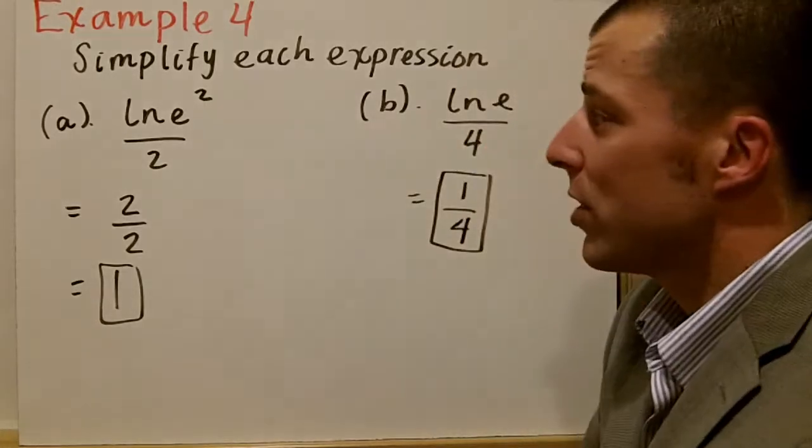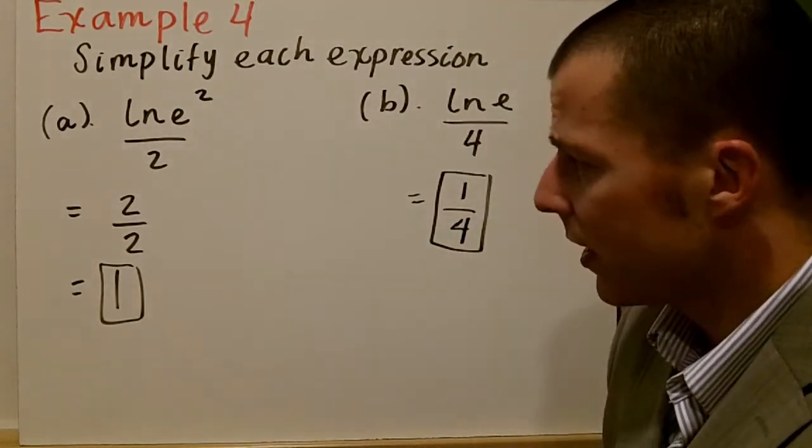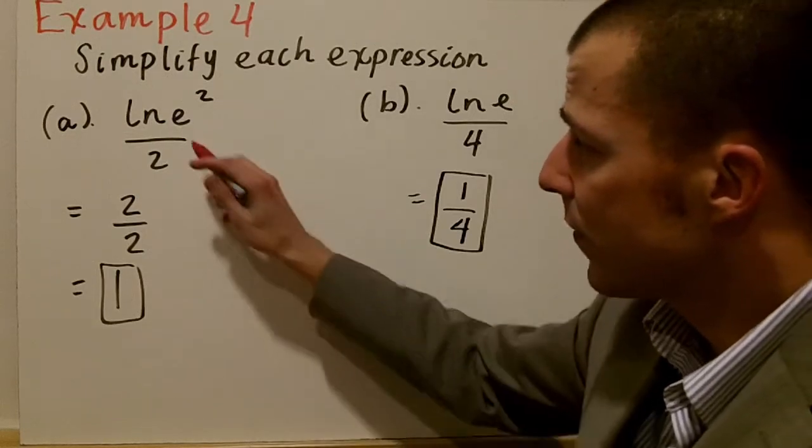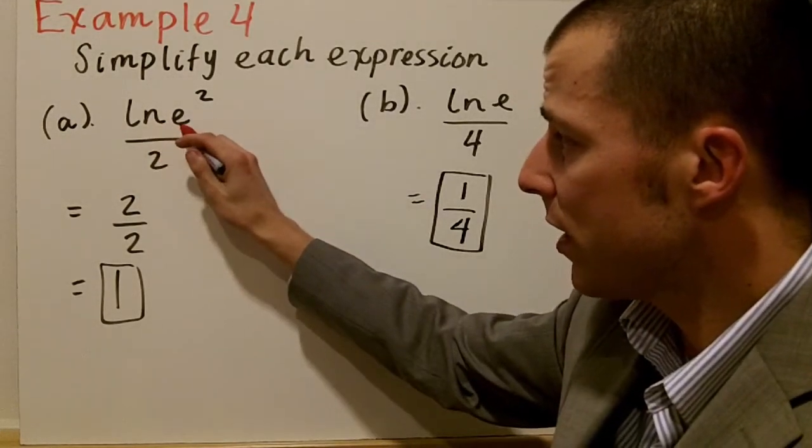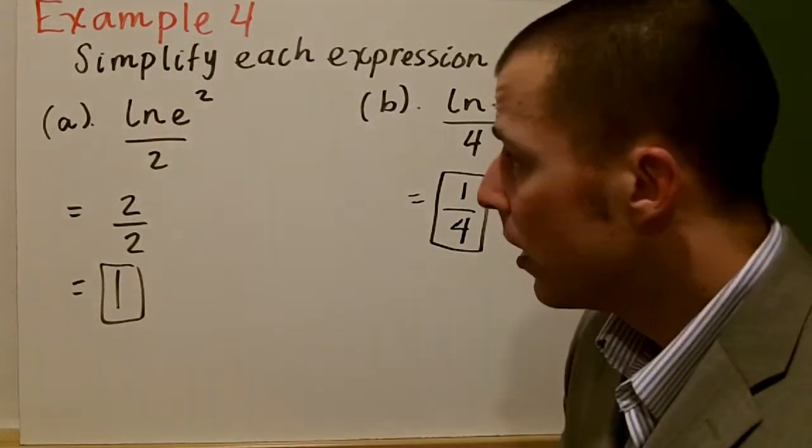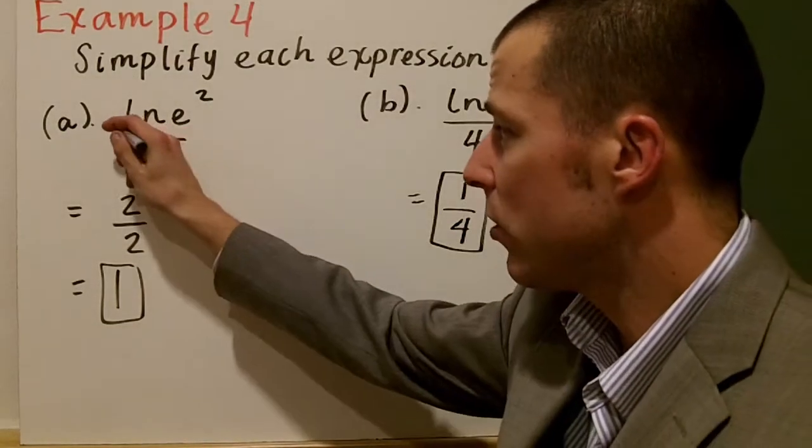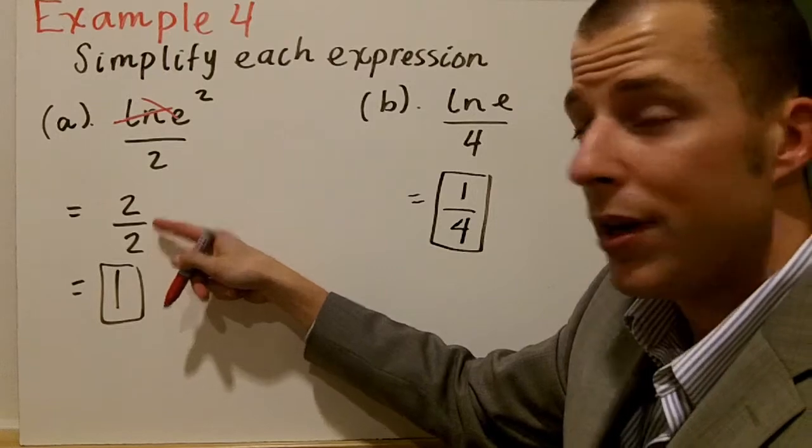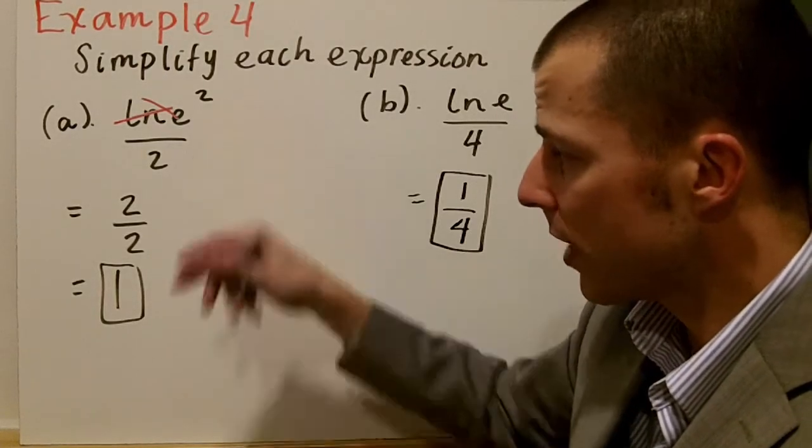The last little example I wanted to show you is just how to simplify and really kind of hit home that natural log and e are inverses. In this first example, you have natural log of e squared over 2. Now, the natural log of e, those are going to cancel out, and you're going to be just left with 2 over 2. The exponent is the only thing that's left.